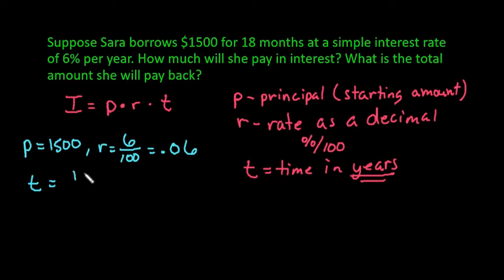Right now, we have 18 months. What we would have to do is convert it to years. We know that for one year, there are 12 months. This would get rid of the unit of months. I would just do 18 divided by 12, which is 1.5.